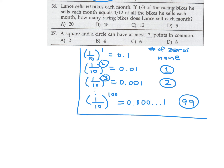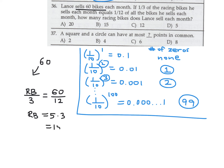Lance sells 60 bikes each month. If one-third of the racing bikes he sells equals 1/12 of all bikes, how many racing bikes does he sell? Set up: (racing bikes)/3 equals 60/12 equals 5. So racing bikes equals 15. Number 36, answer is B.